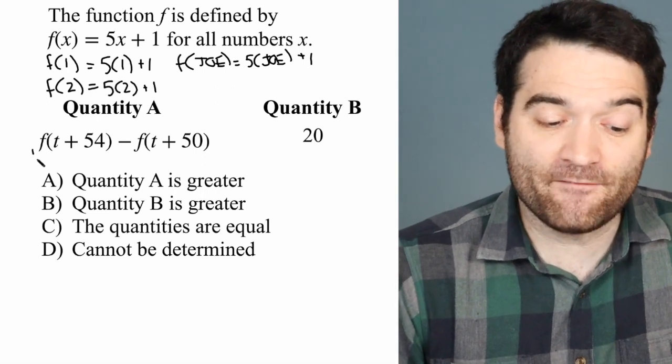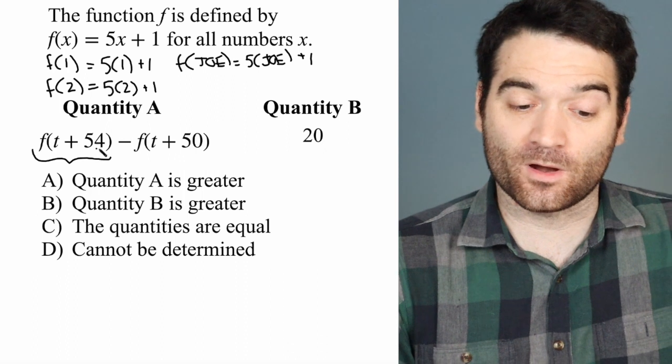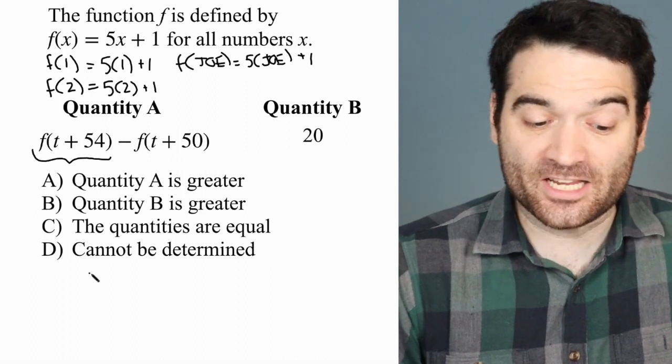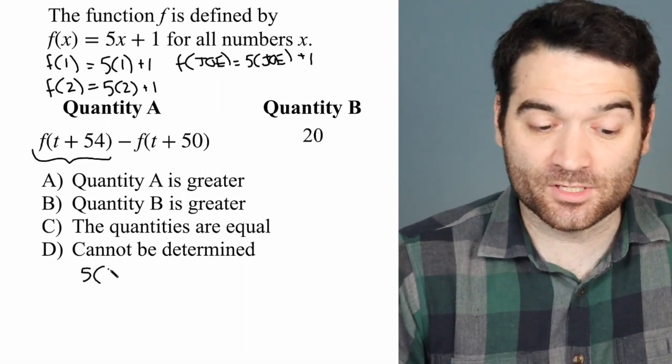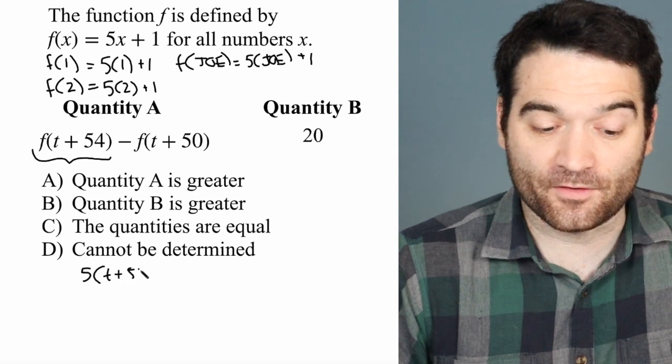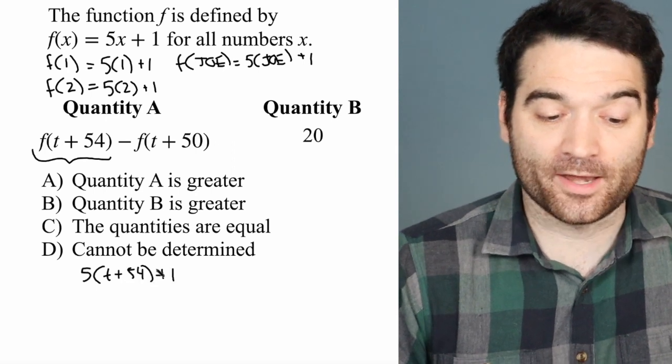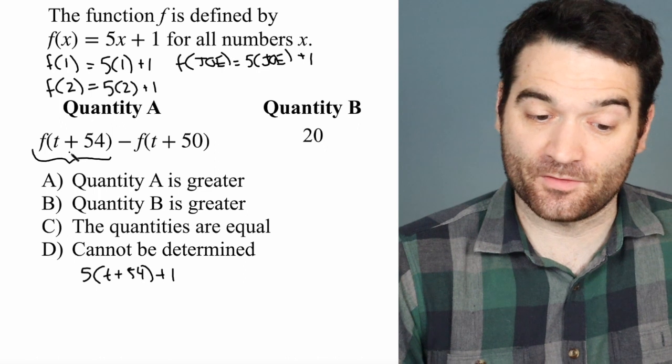So when I say f of this whole thing, t plus 54, well, I'm just going to follow the pattern. It's 5 times t plus 54 plus 1. So f of t plus 54 is that, minus,